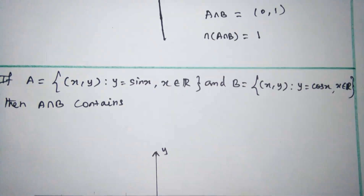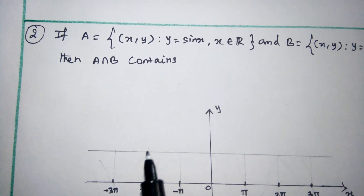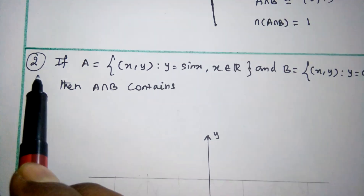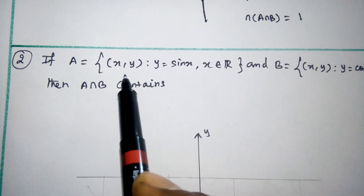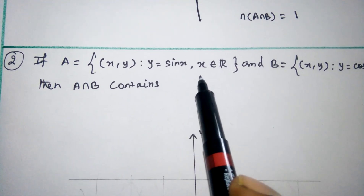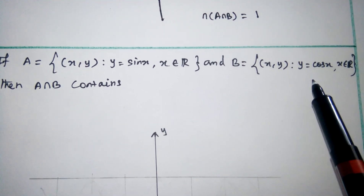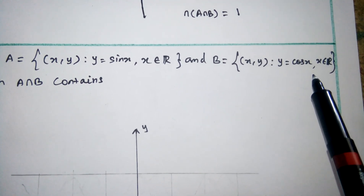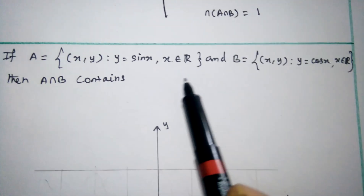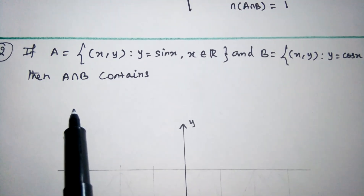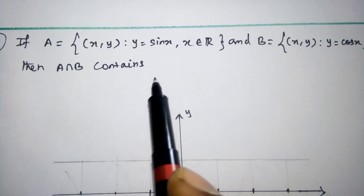The next question is: if A is equal to the set of (x, y) such that y is equal to sin x, and B is equal to the set of (x, y) such that y is equal to cos x, for all x belongs to R. Then A intersection B contains how many points?